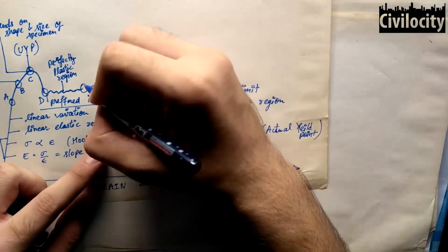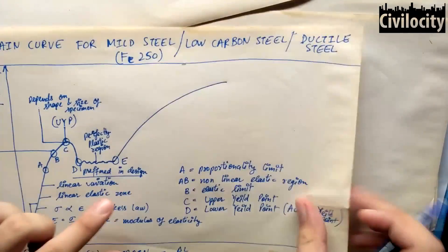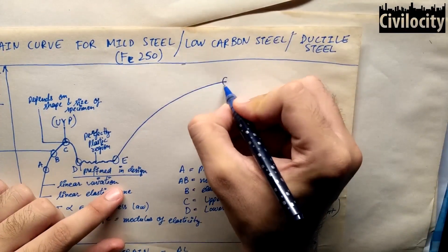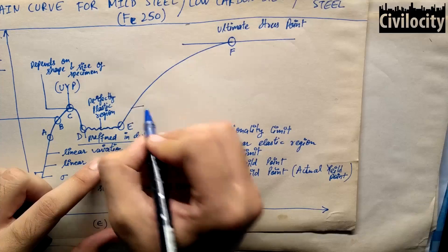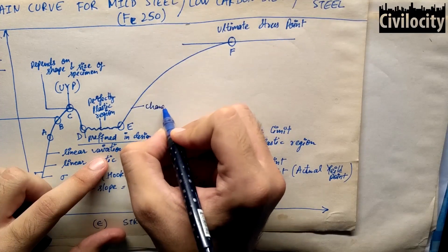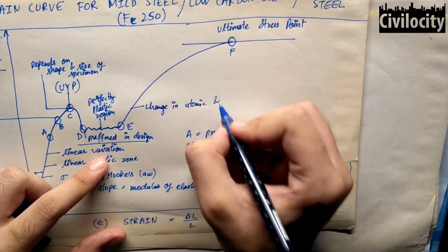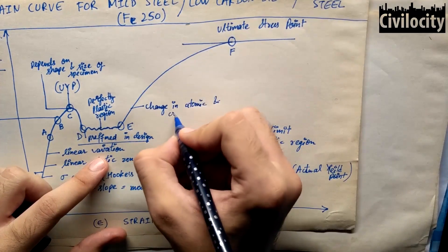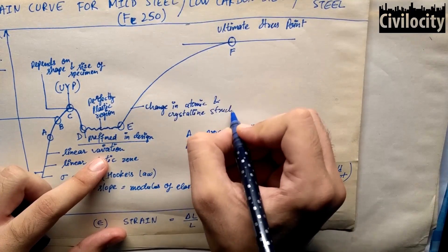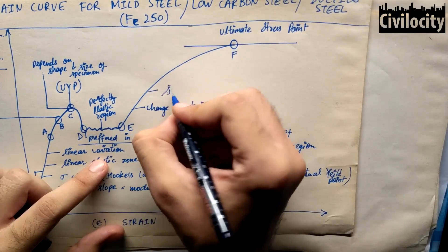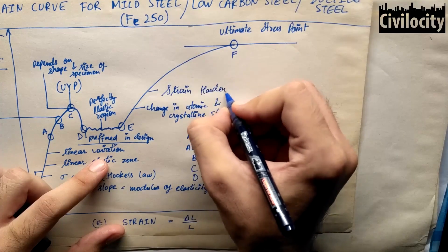On further application of load on this specimen, the curve from E reaches to point F which is the ultimate stress point because this point shows the maximum stress that our specimen can bear during its service life. In this region between E to F, the strain increases with faster rate and our specimen undergoes change in atomic and crystalline structure resulting in increased resistance for further deformation. That is why this region is called the strain hardening region and it is not used for design purposes.